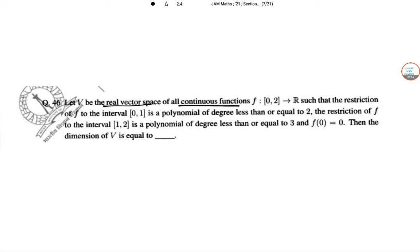Let V be the real vector space of all continuous functions f:[0,2] → R such that the restriction of f to the interval [0,1] is a polynomial of degree less than or equal to 2, the restriction of f to the interval [1,2] is a polynomial of degree less than or equal to 3, and f(0) = 0. Then the dimension of V equals...